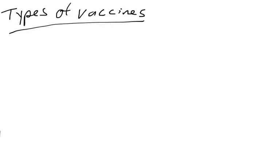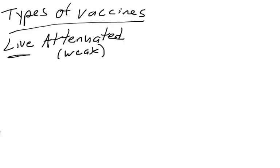So now let's talk about the different types of vaccines. The first type we're going to talk about are what's called live attenuated vaccines.